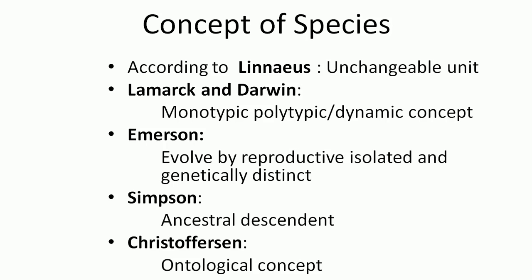The concept of species — according to Linnaeus, the species is an unchangeable unit in Systematics and Taxonomy. This is a very, very basic unit in Systematics.